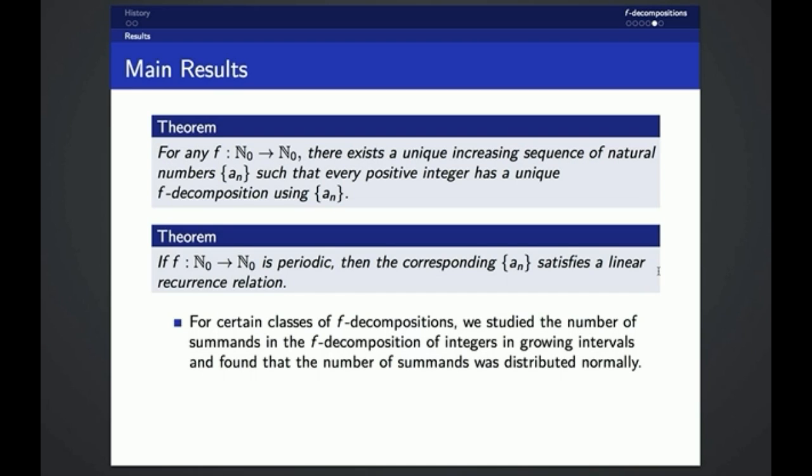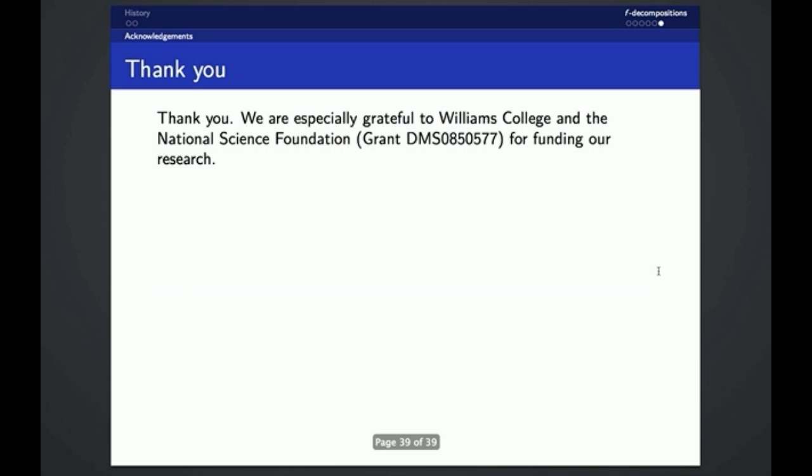Finally, for the rest of our paper for certain classes of F decompositions, we studied the number of summands in the F decomposition of a randomly chosen integer in a growing interval, and we found that the number of summands approaches a normal distribution. Thank you for your time.